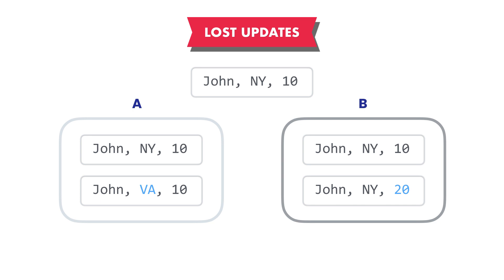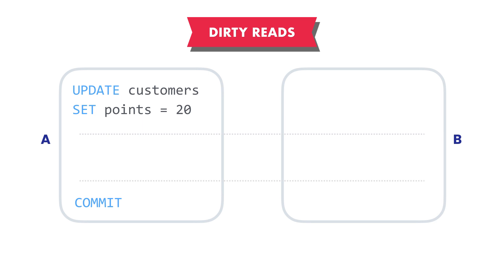Let's look at the next common concurrency problem: dirty reads. A dirty read happens when a transaction reads data that hasn't been committed yet. For example, transaction A changes the points for a customer from 10 to 20, but before it commits the change, transaction B reads this customer and based on the customer's points makes a decision. Let's say for every one point, it gives a $1 discount to the customer.